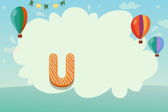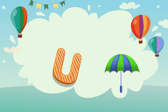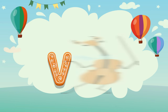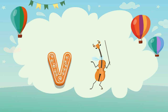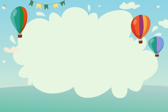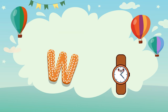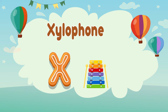U is for umbrella, u-u-umbrella. V is for violin, v-v-violin. W is for watch, w-w-watch. X is for xylophone, x-x-xylophone.